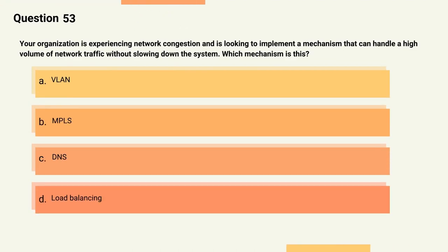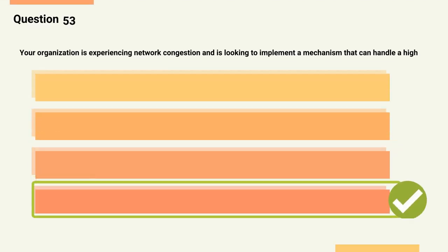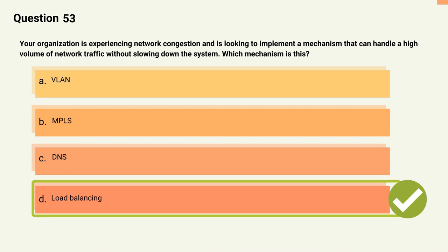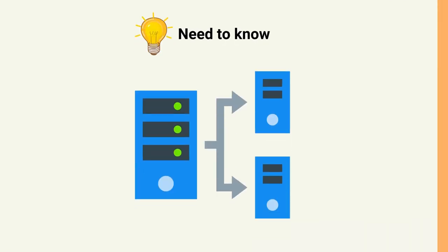Question 53: Your organization is experiencing network congestion and is looking to implement a mechanism that can handle a high volume of network traffic without slowing down the system. Which mechanism is this? Options: A) VLAN, B) MPLS, C) DNS, D) Load balancing. The correct answer is Option D, Load balancing. Explanation: Load balancing is a mechanism used to distribute network traffic across multiple servers to handle a high volume of traffic without slowing down the system.